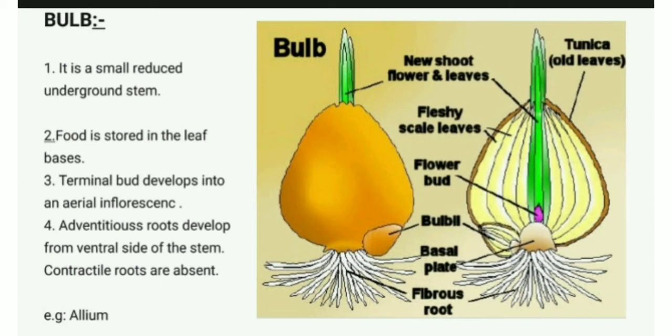The example is Allium cepa (onion). On the screen you can see the image of the onion. It bears fibrous or adventitious roots on the ventral side and the basal plate is present. It also possesses fleshy scale leaves, and new shoots, flowers, and leaves develop. Bulb does not store food in the stem — food is stored in the leaf bases or scale leaves. Daughter bulbs develop from the axillary buds and grow into new plants.